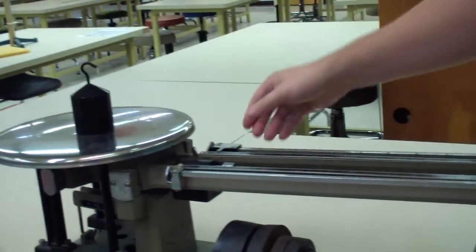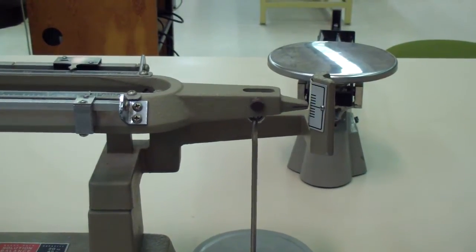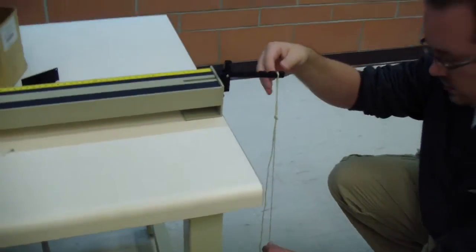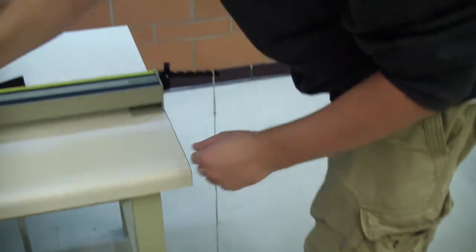First, weigh the hooked mass you'll be using to apply tension to the guitar string. Hang the mass from the tensioner. Use string to keep the mass close to the ground for safety reasons.